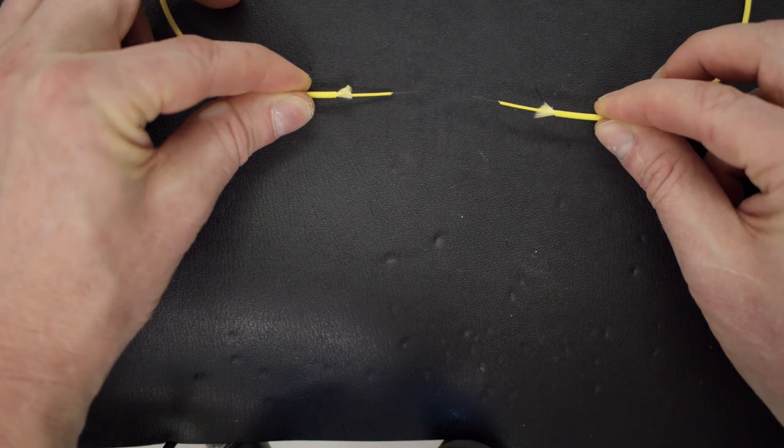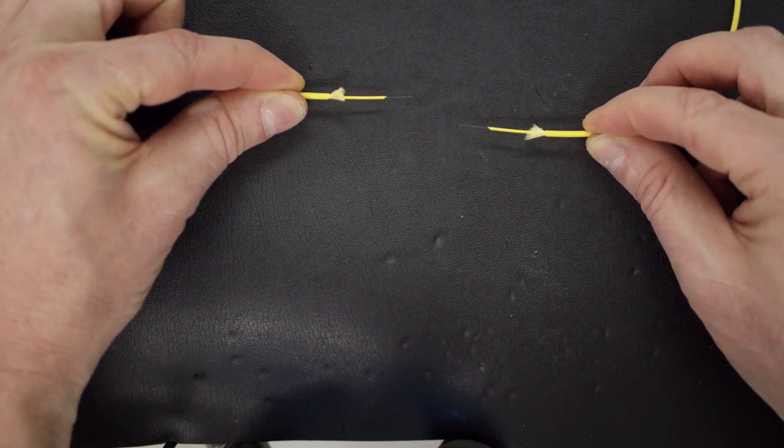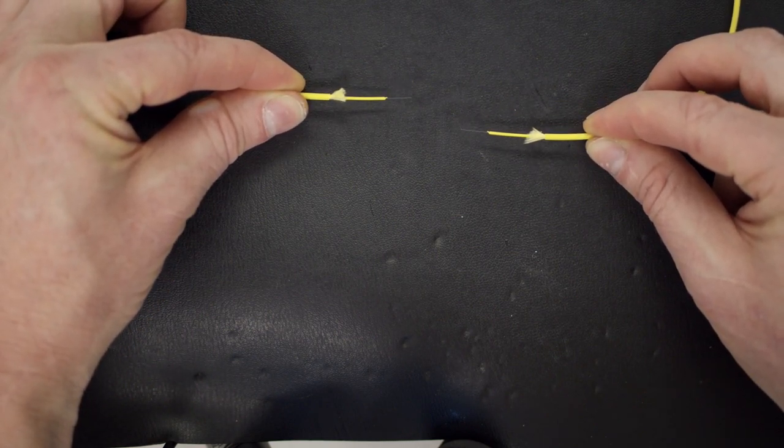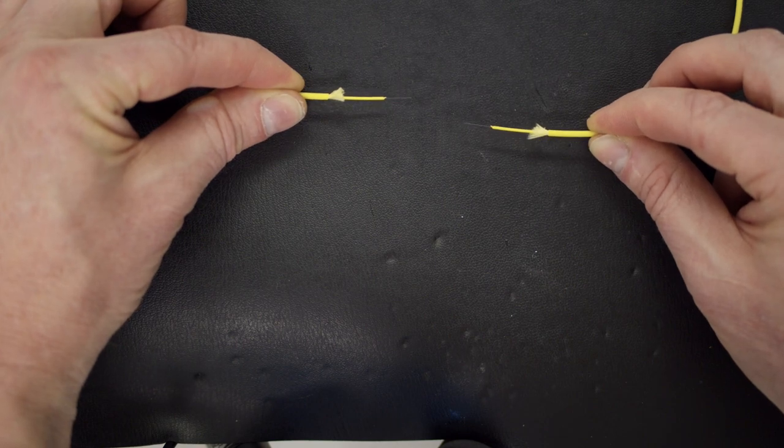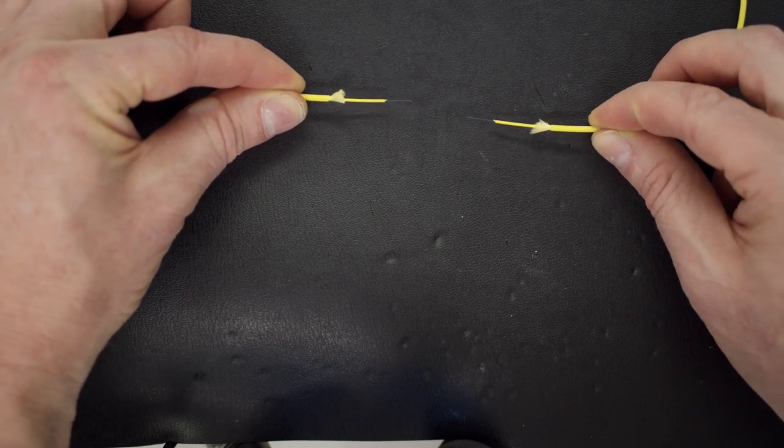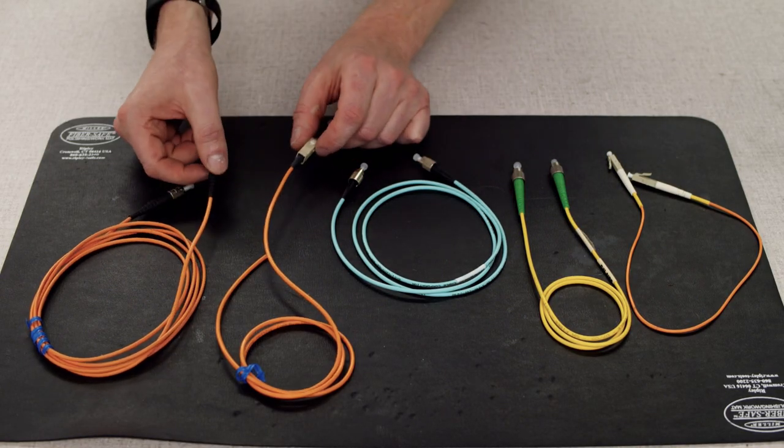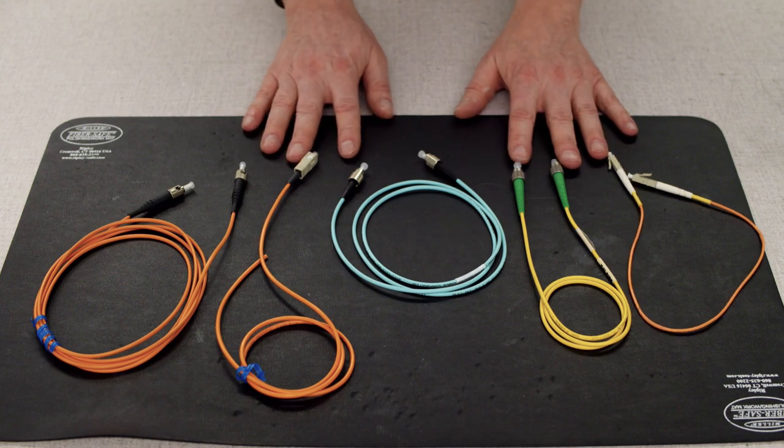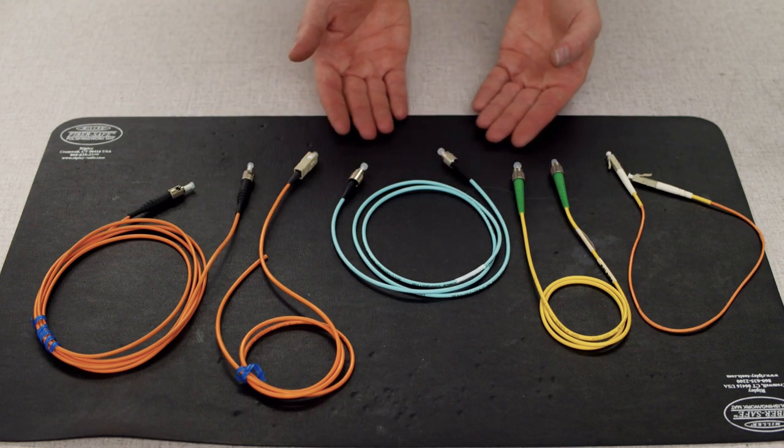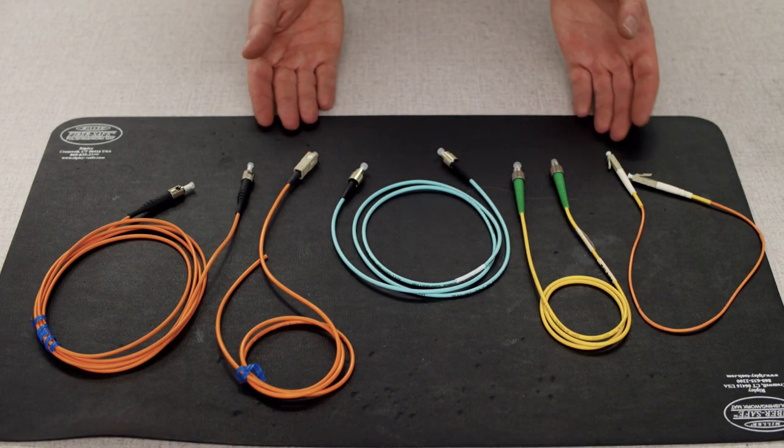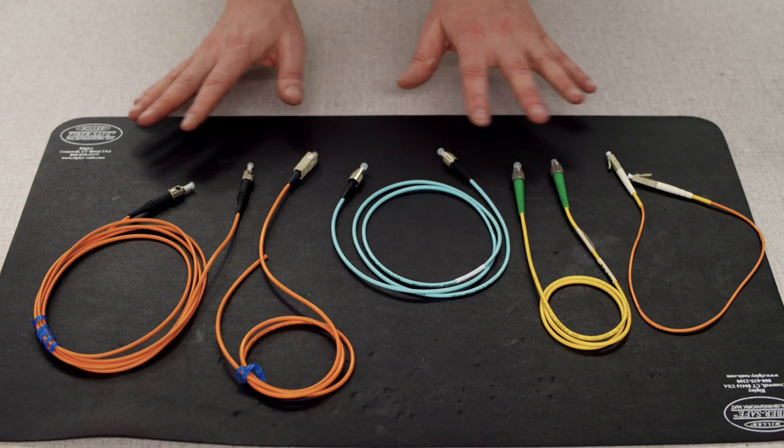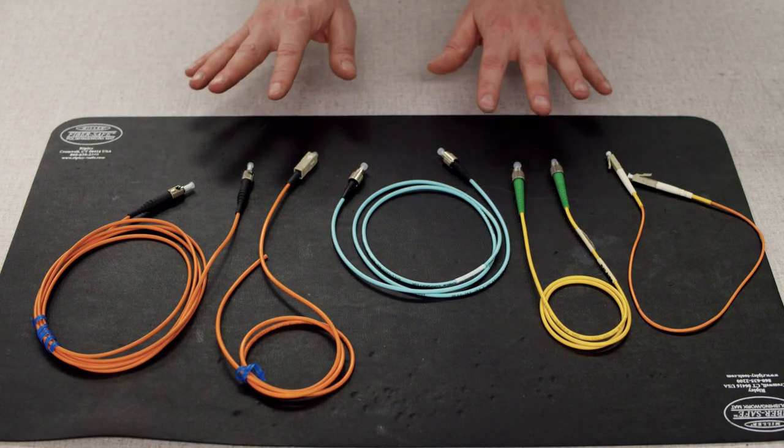I mean, there's always splicing of course, but that is a permanent solution and it's only used to repair breaks or where low loss connections are absolutely critical. So this is where fiber optic connectors come into play, but just like fiber optic cable, fiber optic connectors come in a variety of styles, but these are probably the most common ones seen today in commercial use.